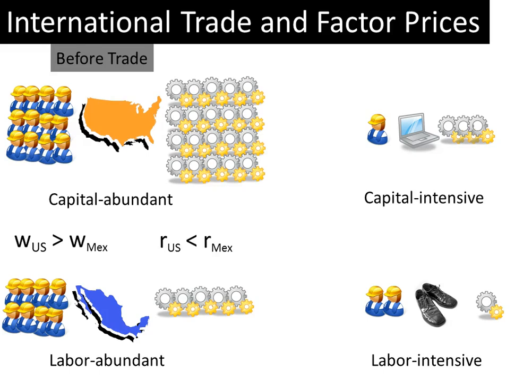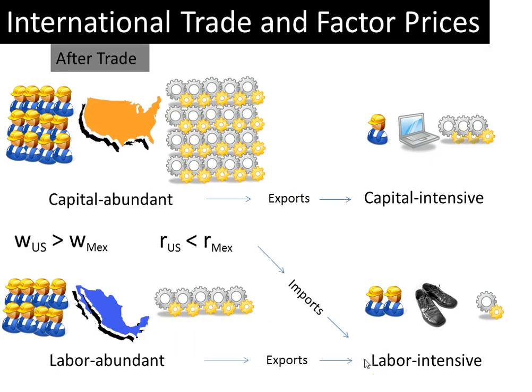Now what would happen if the two countries opened up to free trade with each other? According to the Heckscher-Ohlin model, the capital abundant country, the U.S., would export the capital intensive good — laptops — and import the labor intensive good — shoes. Similarly, Mexico, the labor abundant country, will export the labor intensive good and import the capital intensive good. Now how is this trade going to affect factor prices, that is, wages and real interest on capital?